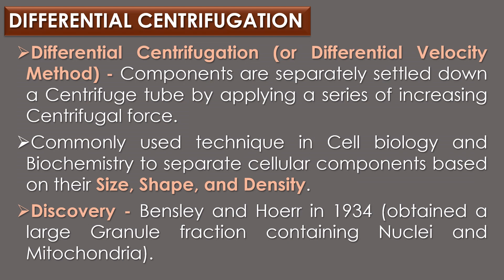Differential centrifugation is also called the differential velocity method. It is a type of centrifugation process in which components are separately settled down a centrifuge tube by applying a series of increasing centrifugal force. It is a commonly used technique in cell biology and biochemistry to separate cellular components based on their size, shape, and density. Differential centrifugation was first introduced by Bensley and Hoare in the year 1934, who obtained a large granule fraction containing nuclei and mitochondria.